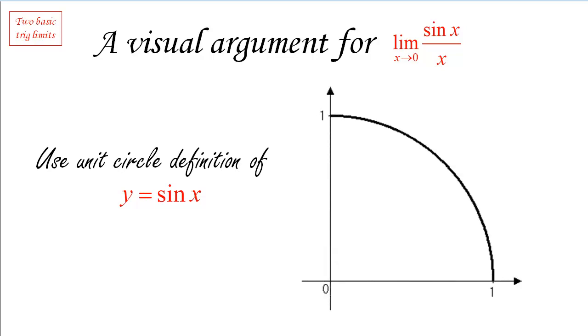So, we draw the unit circle and because we're letting x go to zero we're only going to focus on the first quadrant. Of course, we may want to consider when x is negative which would take us to the fourth quadrant but the argument is exactly the same. So, just for simplicity let's stick to the first quadrant.